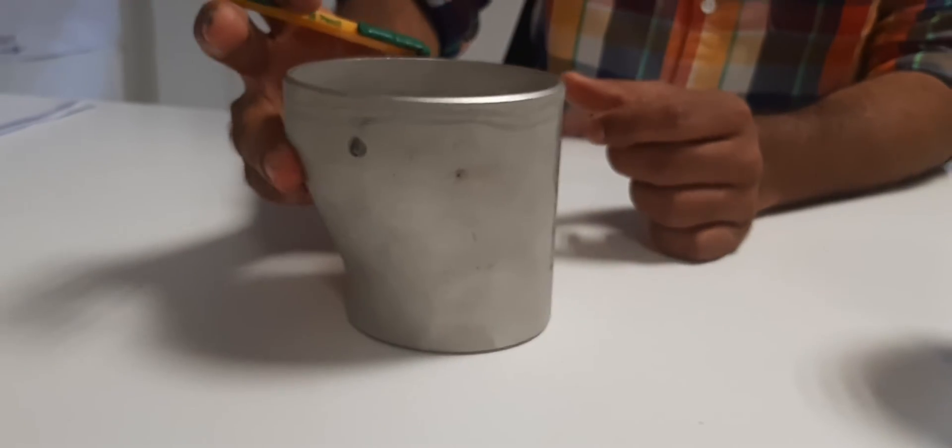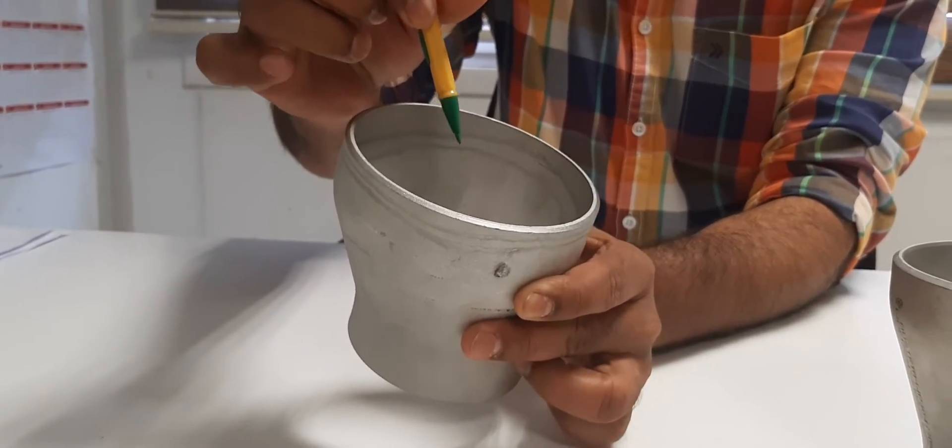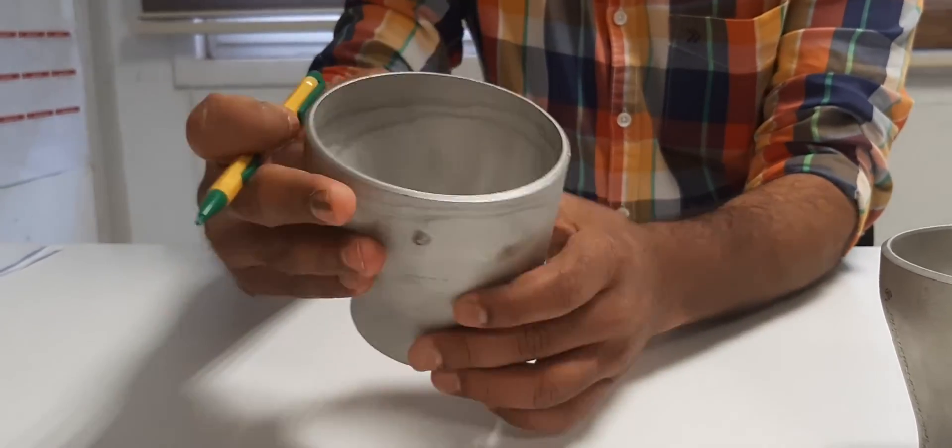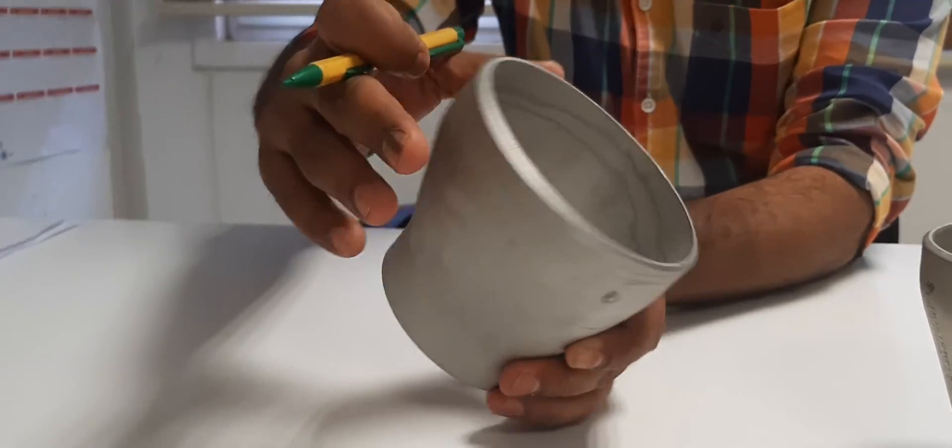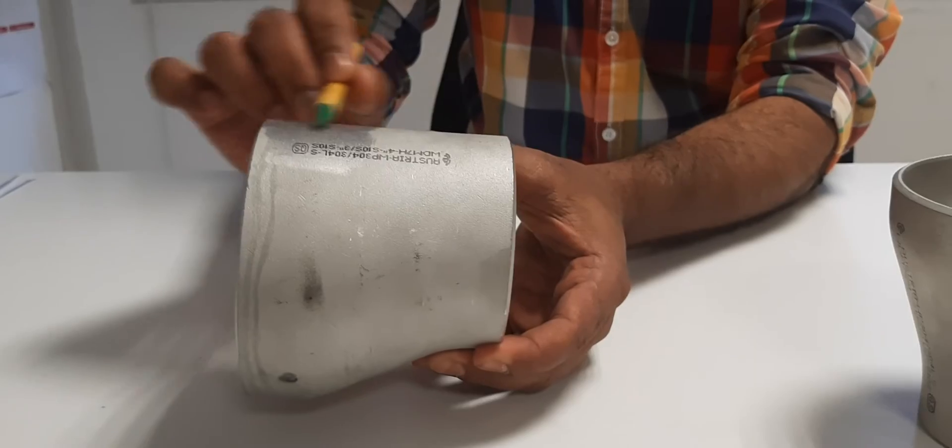And then the center axis is not the same with offset. One side is normal, looks like a cone, and another side is flat. See, fully flat on one side.